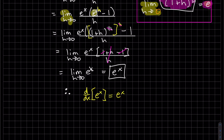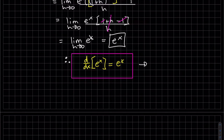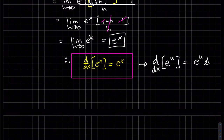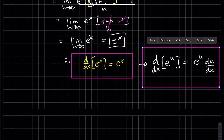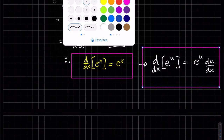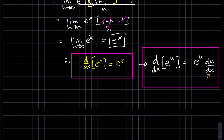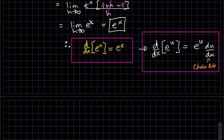An extremely difficult one to memorize. We can also write it out in terms of u: you copy it, and then you take the derivative of the inside, or we can write that as du/dx. Again, that would be using the chain rule.